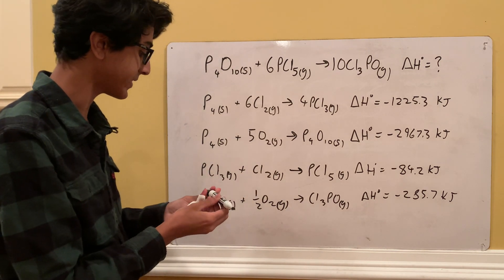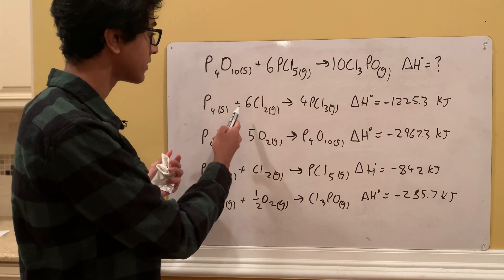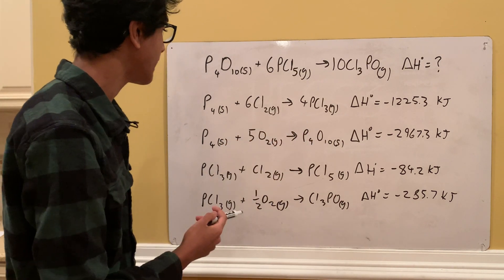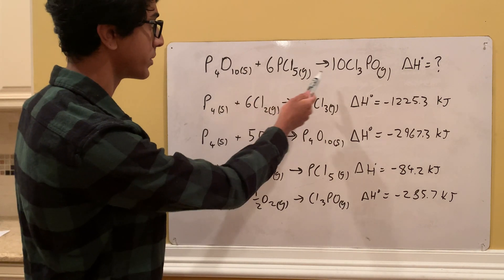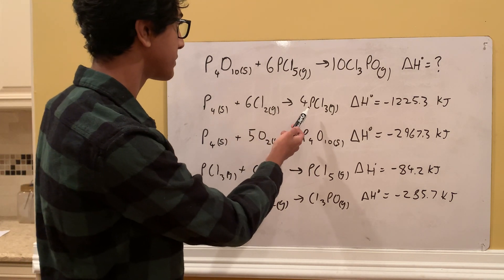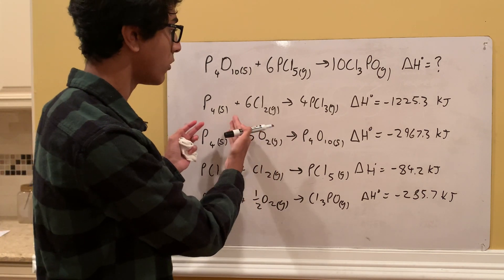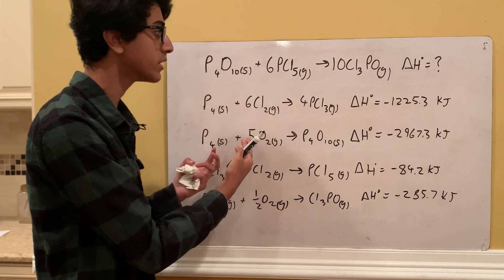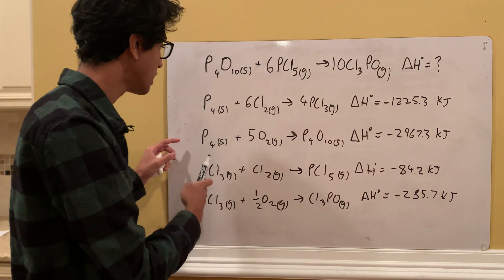Let's start with the first reaction: P4 plus 6Cl2 goes to 4PCl3. P4 does not show up in the target reaction, Cl2 doesn't show up in it, and PCl3 doesn't show up in it either — so we're going to have to cancel all three of these out. We don't have enough information yet to know what to do with this one, so we'll keep it the same and move on.